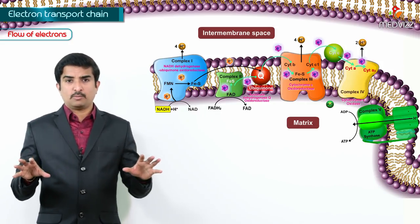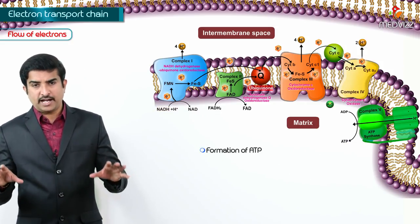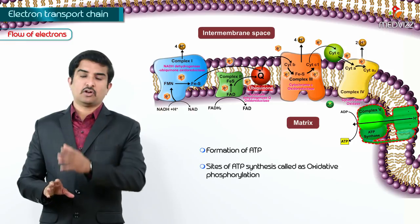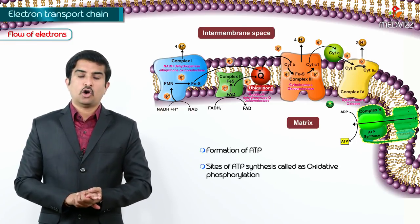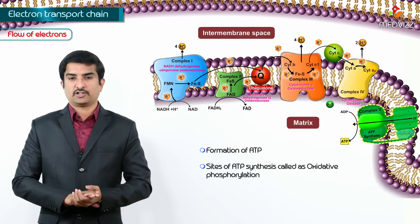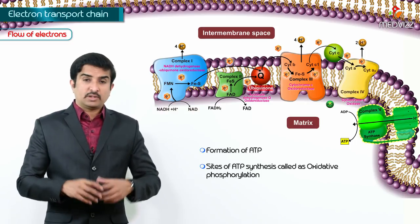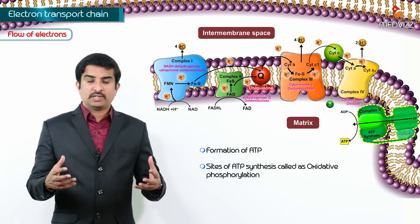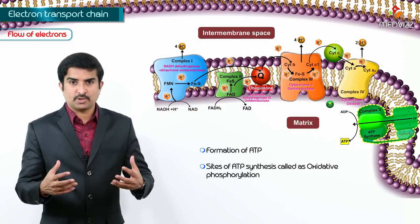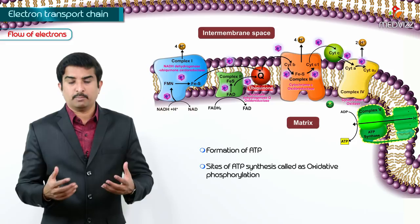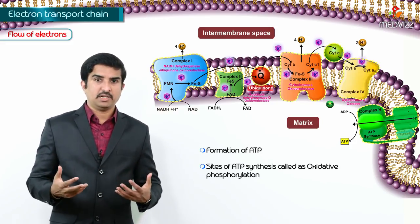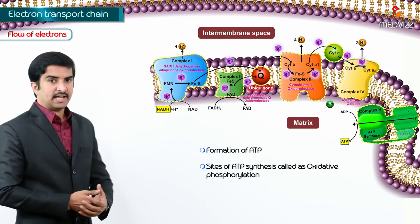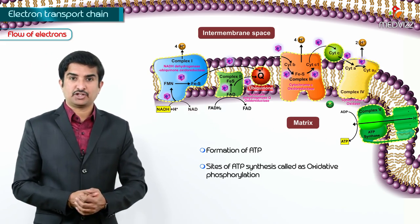Now let us talk about the formation of ATP and the sites of ATP synthesis, which is called oxidative phosphorylation. This is how electrons are transferred by electron carriers and complexes via NADH as well as FADH2.